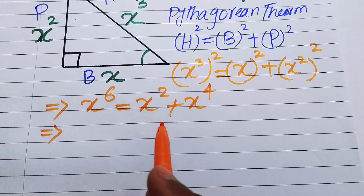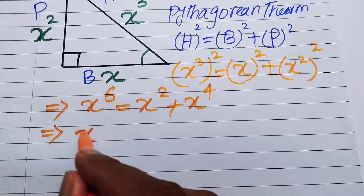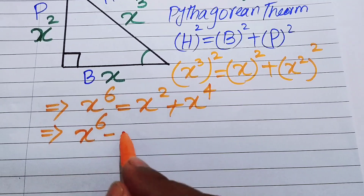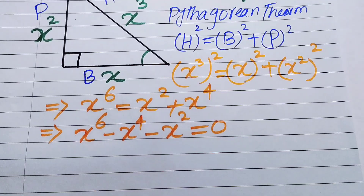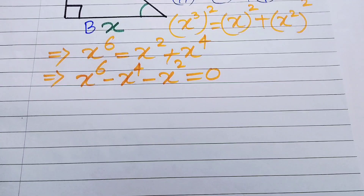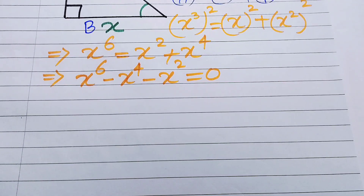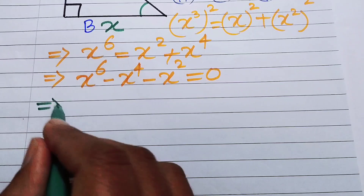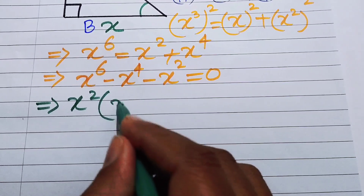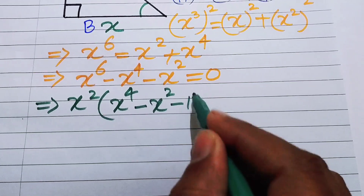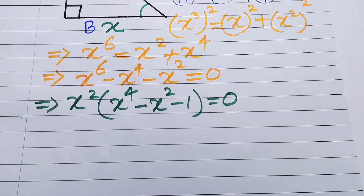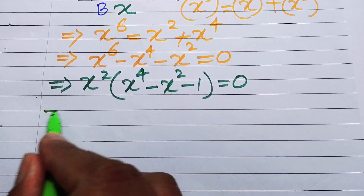We rearrange the terms, moving everything from the right-hand side to the left-hand side, and we get x⁶ − x⁴ − x² = 0. In the next step we take x² as a common factor and write it as x²(x⁴ − x² − 1) = 0.